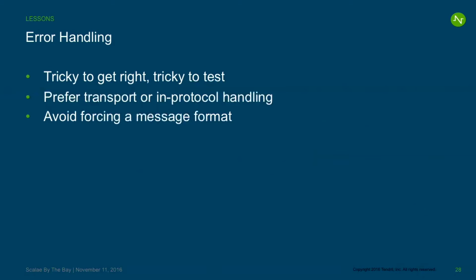Error handling: it's tricky to get right and even worse to test. With hindsight, we think we probably would have preferred transport or in-protocol level handling. Finagle Thrift uses protocol level — they have an exception type in Thrift, which is fantastic. Otherwise, doing it on the wire is a lot easier than forcing your engineers to include an error field in every message — because now you have to handle cases where the message doesn't have the error field, figure out fallbacks, and so on.